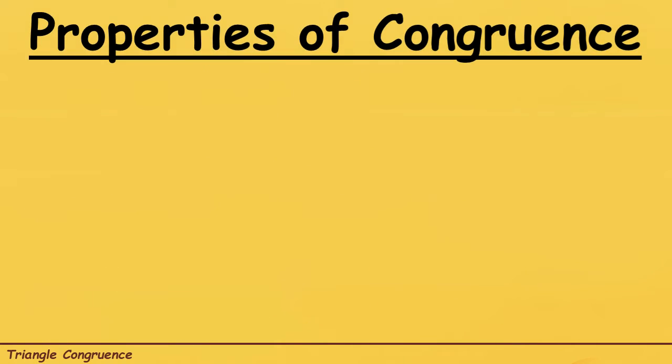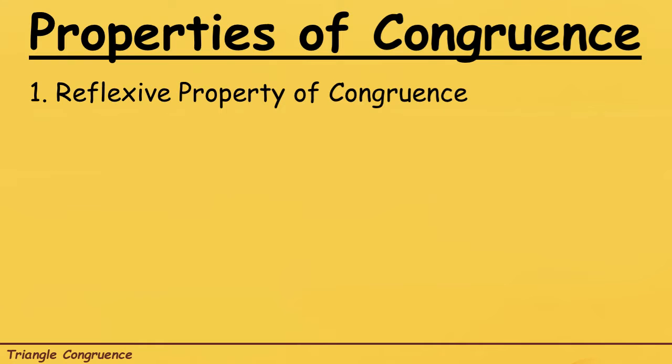Properties of congruence. The properties of equality as well as the properties of congruence that follow from them are often used in doing formal geometric proof. The first one is the reflexive property of congruence. From the word itself — reflexive — we can have angle A is congruent to angle A when it comes to angles. And for the line segment or the sides, we have line segment AB is congruent to line segment AB.